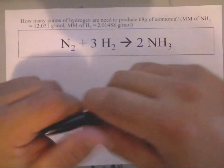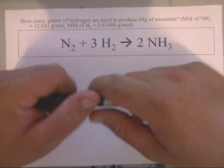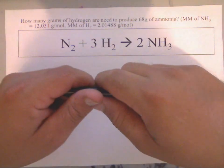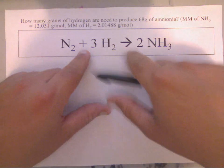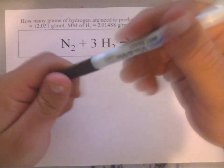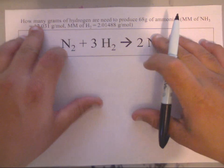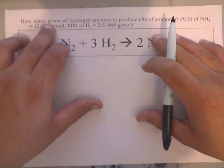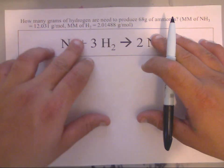Alright guys, in this video I'm going to show you how to go from grams to grams using a balanced equation. Now when you read the problem, it says it's asking you how many grams of hydrogen. So since it's asking how many grams of hydrogen are needed, then you come over here and you find hydrogen, so you put a number sign and a G underneath hydrogen.